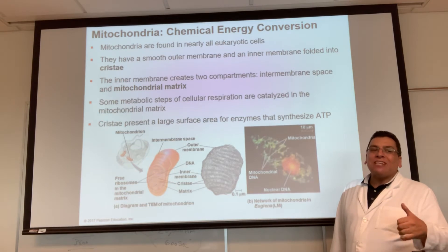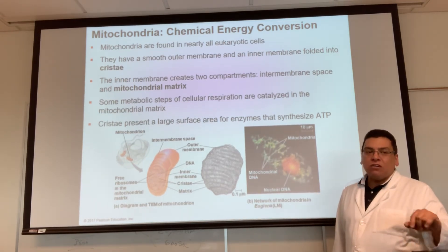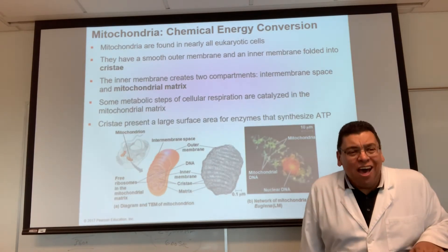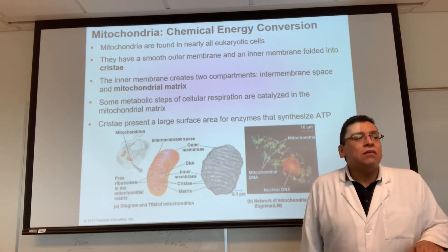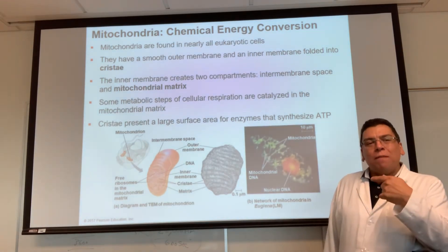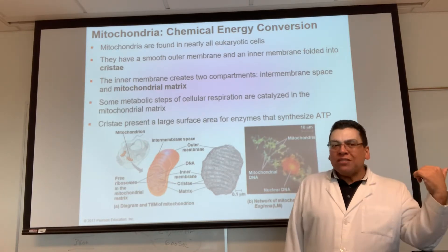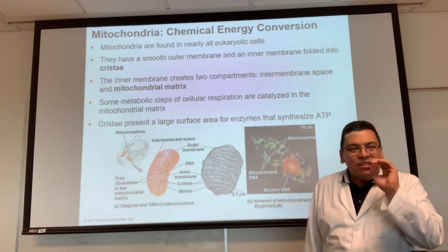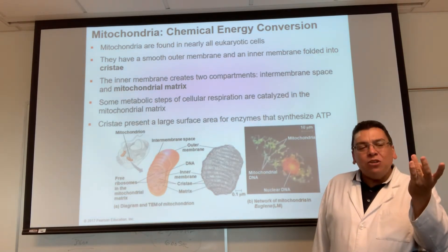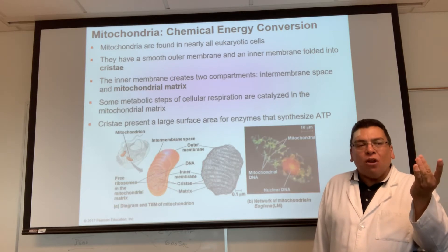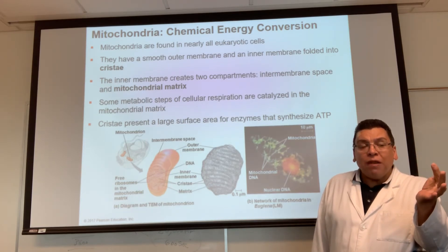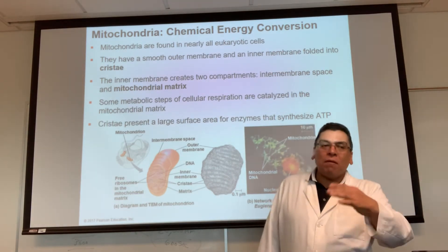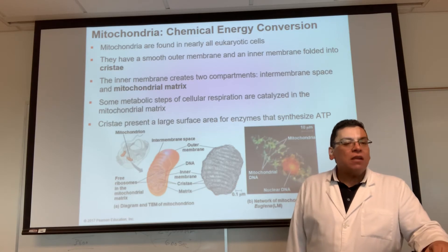The cisternae were sacs, but these are folds — cristae. If you look inside the mitochondria, you'll notice ribosomes. Those ribosomes, compared to the ones outside in your cytoplasm and rough ER, are different. The ribosomes attached to your rough ER, on the outer surface of your nucleus, and free-floating in your cytoplasm have a size of 80S — don't worry about what the 'S' is, it's just their size.